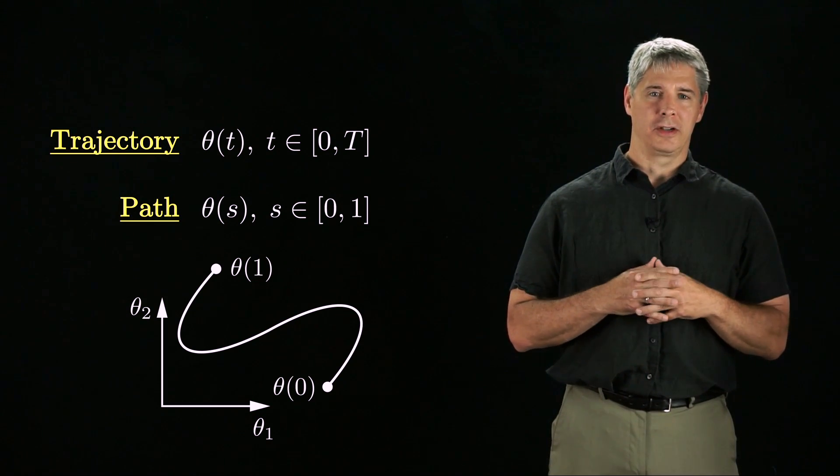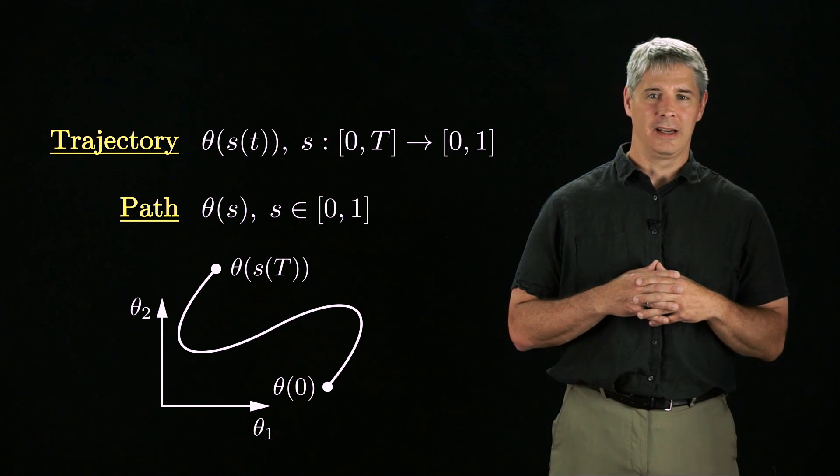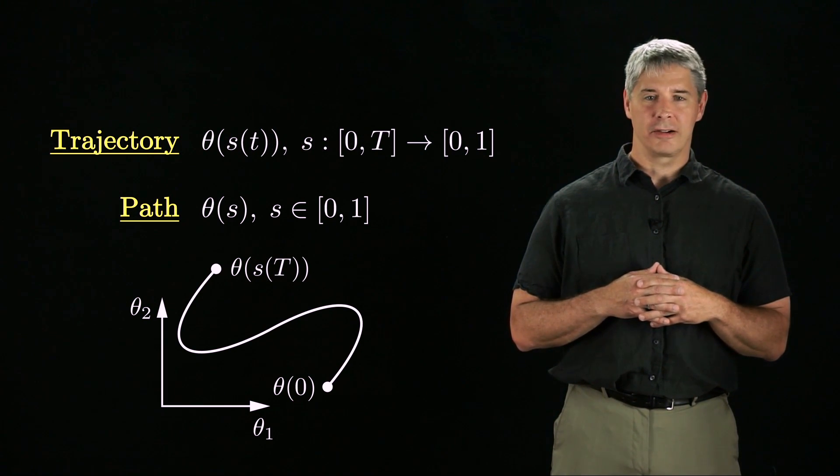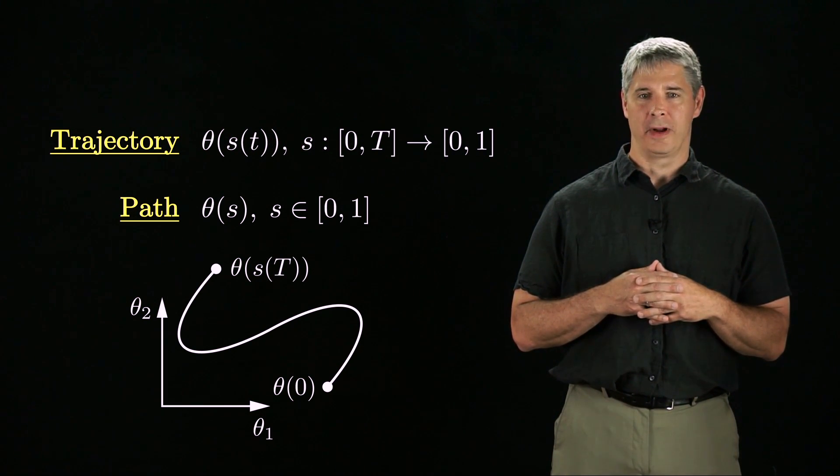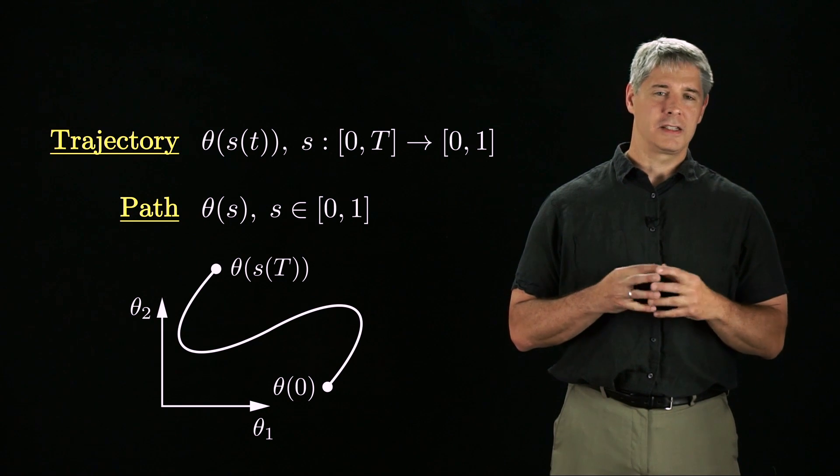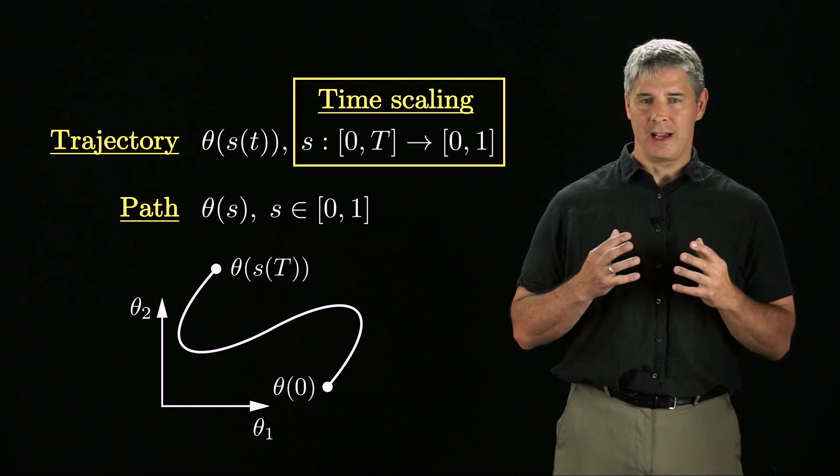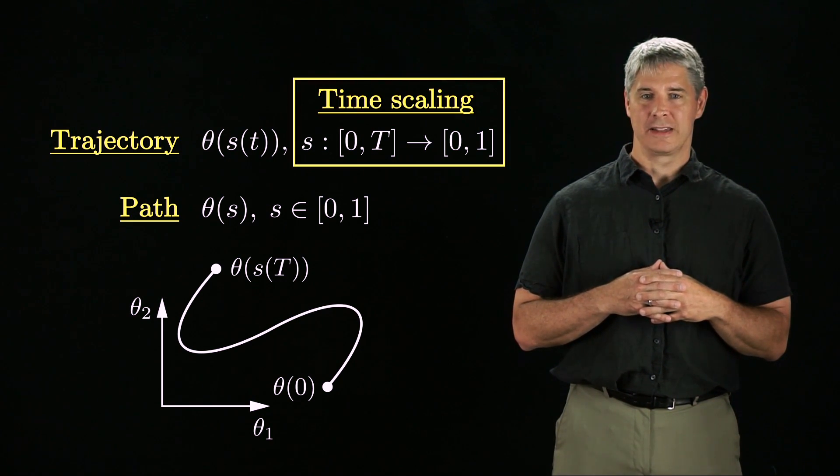A path can be turned into a trajectory by defining a function s(t), which maps the time range zero to capital T to the path parameter range zero to one. This function is called a time scaling. The time scaling controls how fast the path is followed.